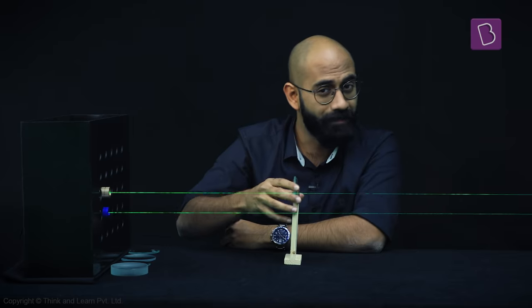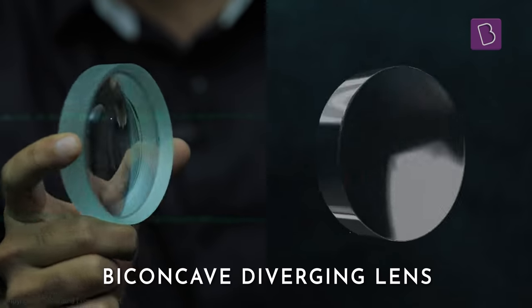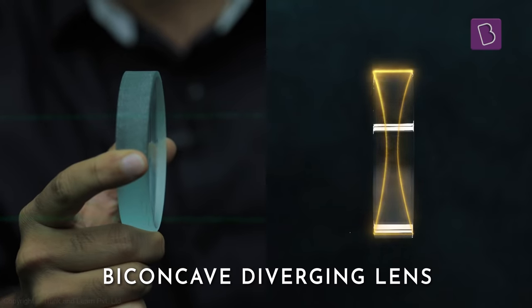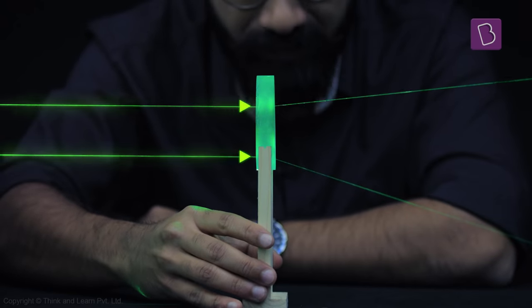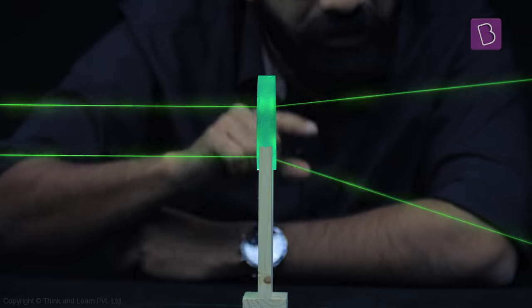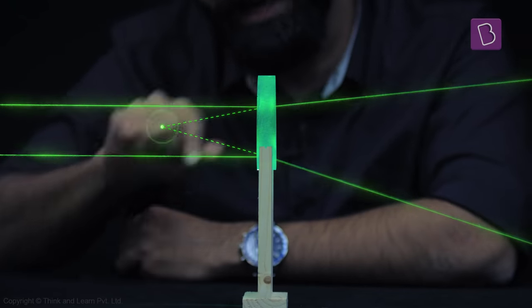The other type of lens is a diverging lens. And over here, I have a biconcave diverging lens. When the rays pass through the lens, they get diverged. If you look closely, you'll notice that they look like they're emerging from a point behind the lens.